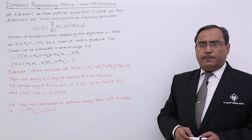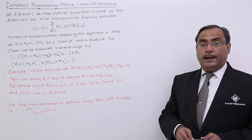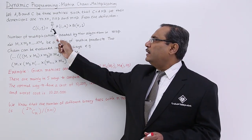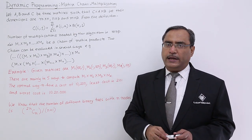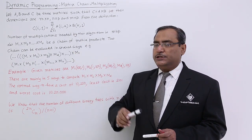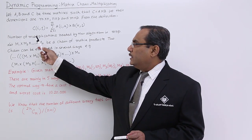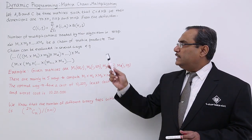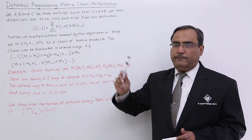In this matrix multiplication, the complexity depends upon the number of multiplications required. Multiplication operations are more costly compared to addition operations. So the number of multiplications required will decide the complexity of this operation. The number of multiplications needed by this algorithm is M×N×P, which is the complexity for this particular matrix multiplication.